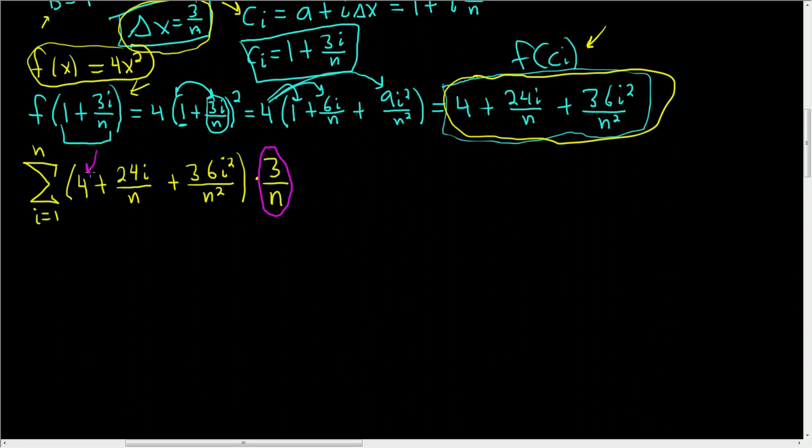So I'm going to take this 3 over n. I'm going to multiply it by 4. That's 12 over n. That doesn't have any i's, so you can write it outside. So 12 over n. And then i runs from 1 to n. So if it doesn't have an i, you can write it outside of the summation sign. Plus 3 times 24, that's 72. So we get 72 divided by n times n is n squared. Then we have the sum as i runs from 1 to n of i.